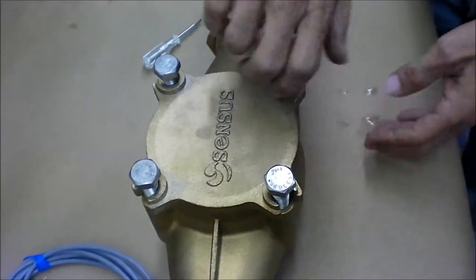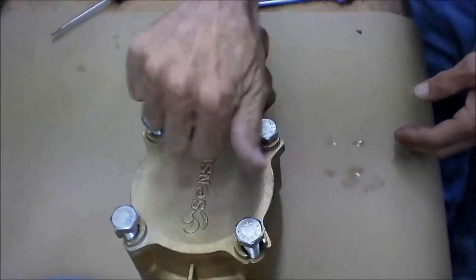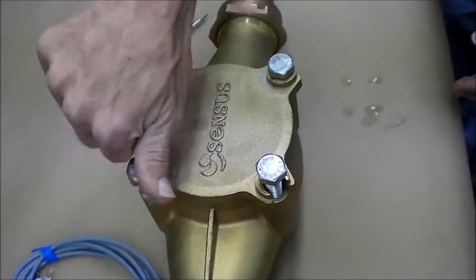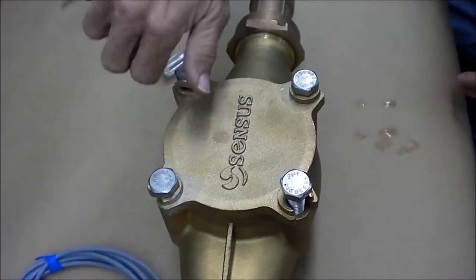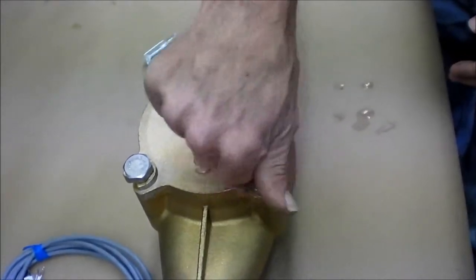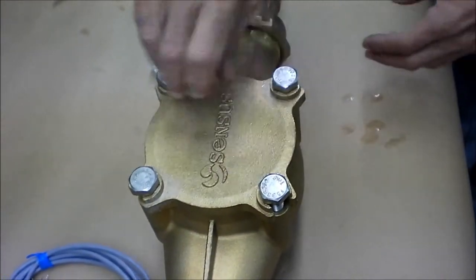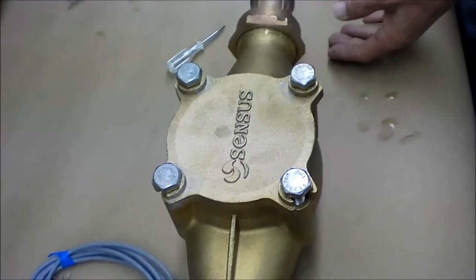Screws on these meters are stainless steel. Over time, yours may have some corrosion buildup from the brass on them. If you wanted to put a little bit of anti-seize lubricant on a used one, it would not hurt anything and will help you to take it apart in the future. On the new meters, they do not come with that, so we are not putting it back on here for the purpose of this video.